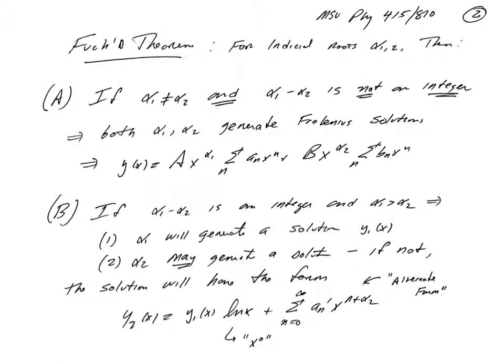then there are actually three separate cases. The simplest case is if the roots are distinct, alpha 1 is not equal to alpha 2, and the difference between them is not an integer. Then the simplest expectation is fulfilled. Each of alpha 1 and alpha 2 generate a Frobenius solution with different coefficients a sub n and b sub n.